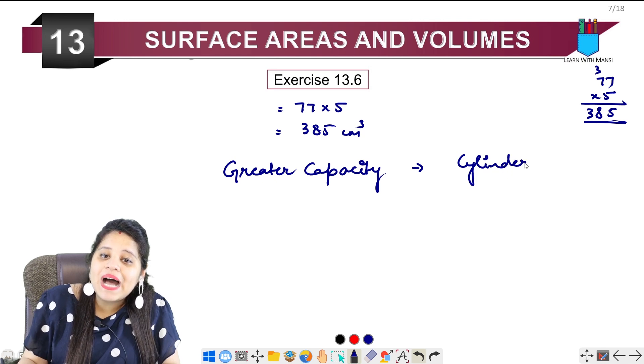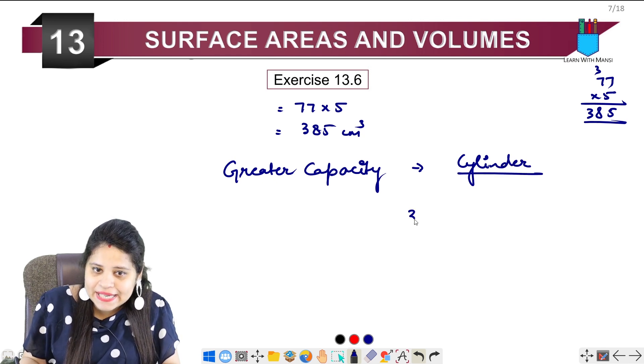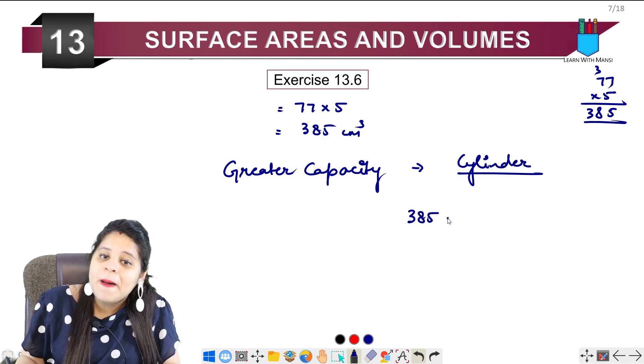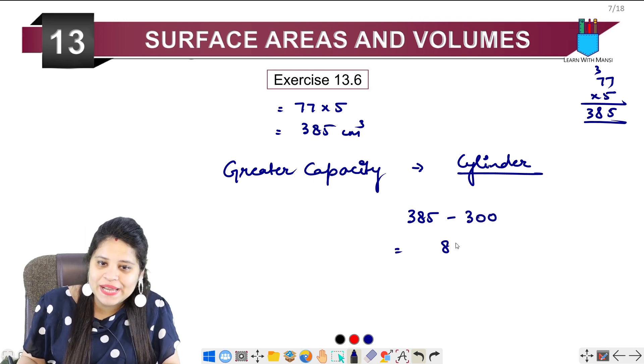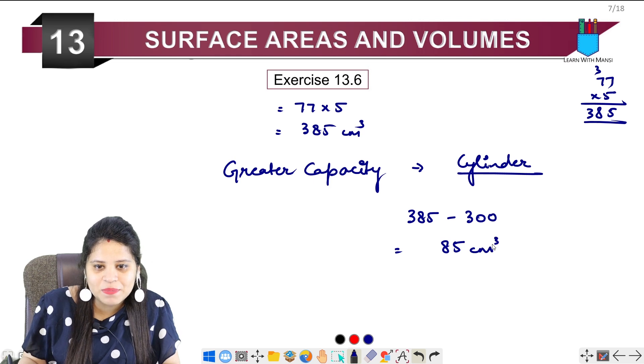Now how much more? The cylinder is 385 minus the cuboid which is 300. So it will be 85 cm³.